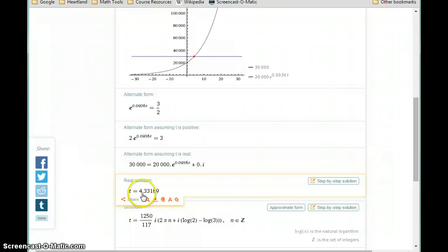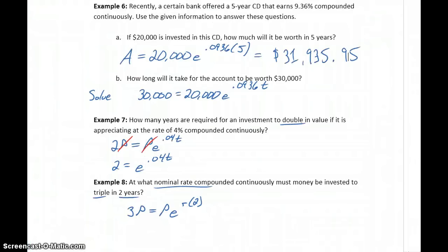So our real solution that we come up with a little ways down here. So this is just giving us some different interpretations of what it is that we're solving. But our real solution is what we're interested in, in this case, 4.33. So this would mean that our time t is going to be 4.33 years.